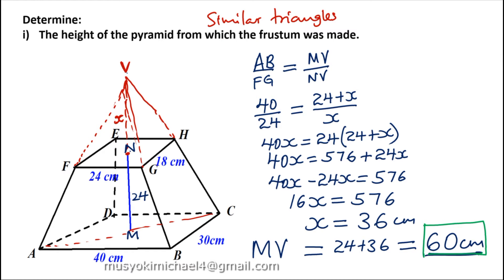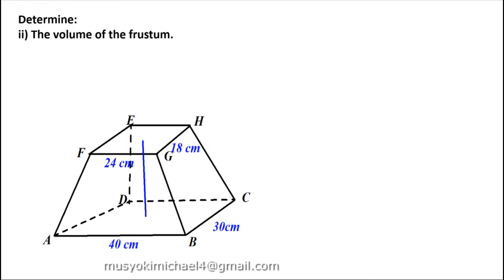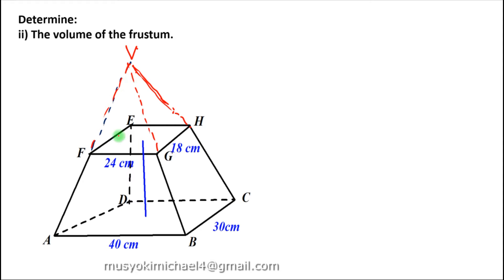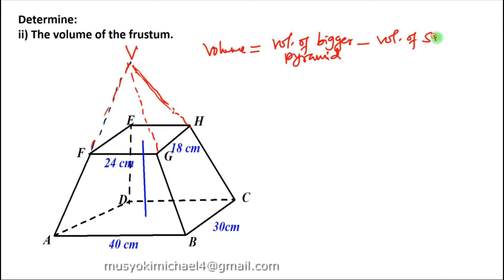So we move on and look at the volume of the frustum. For us to get the volume of the frustum, it will be the volume of the bigger pyramid minus the volume of the smaller pyramid.